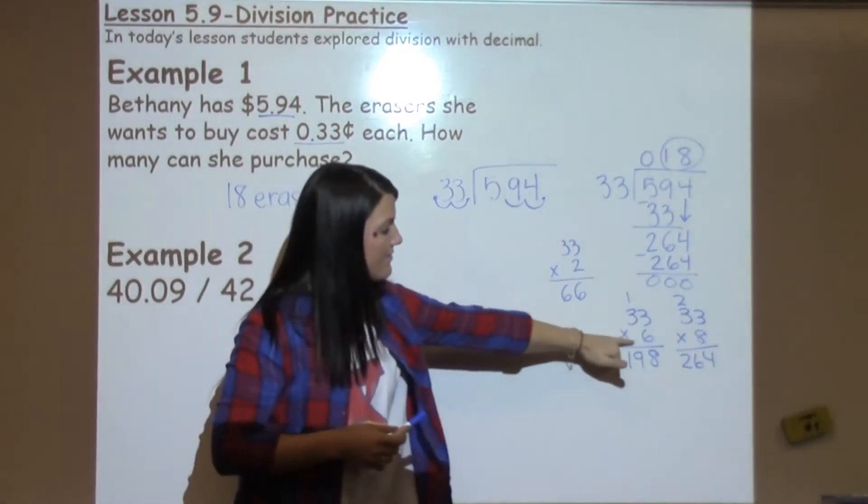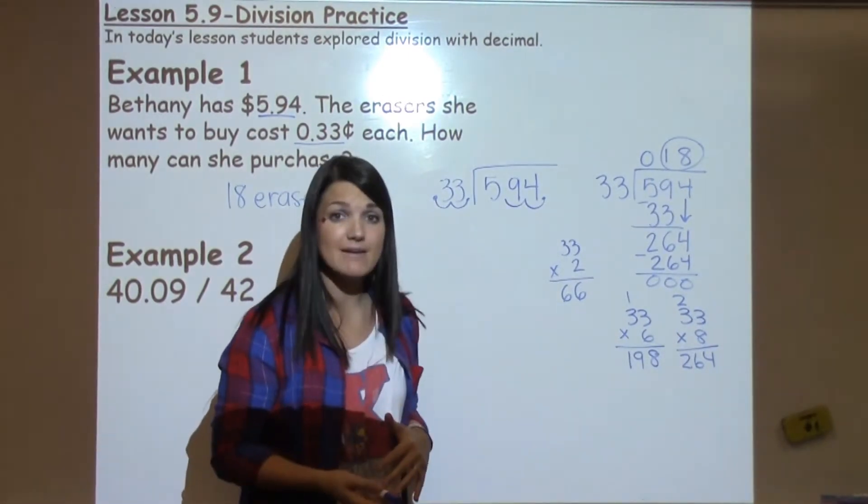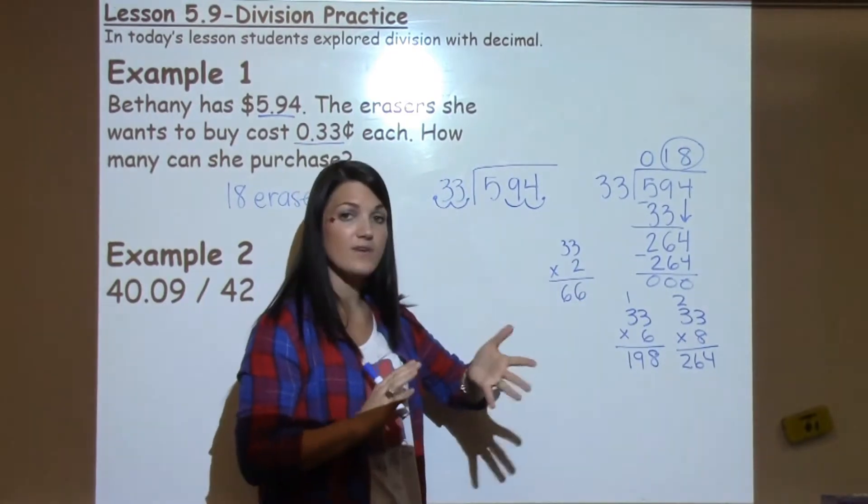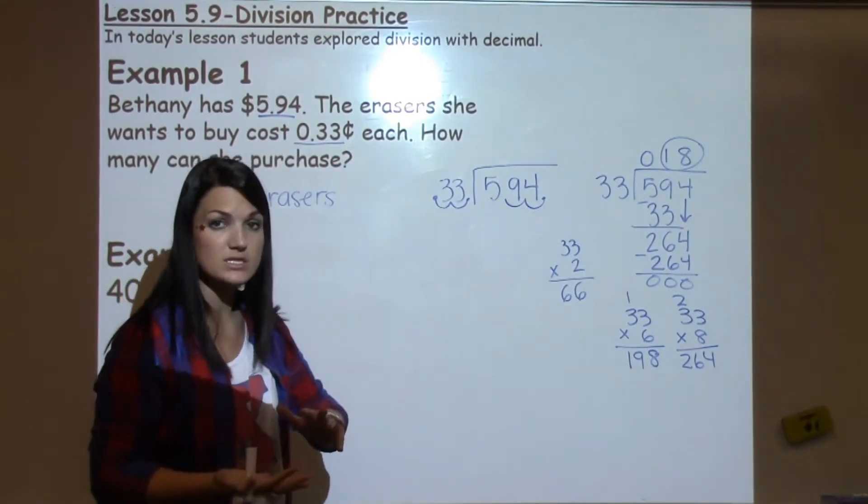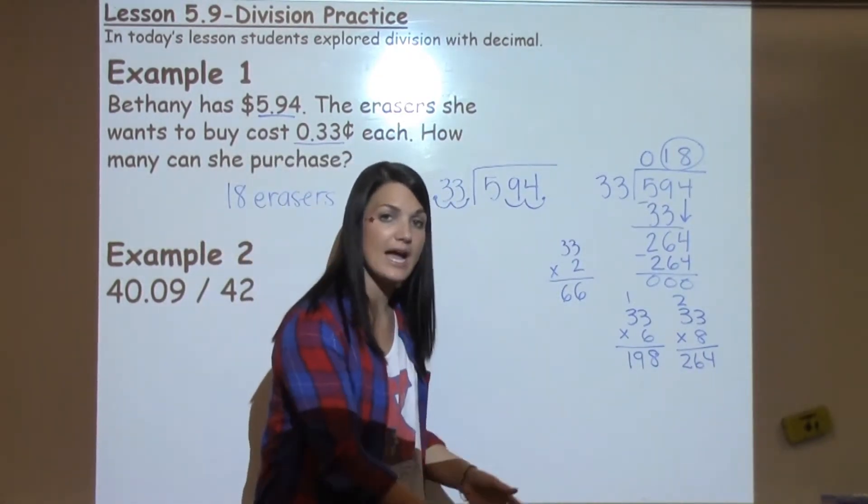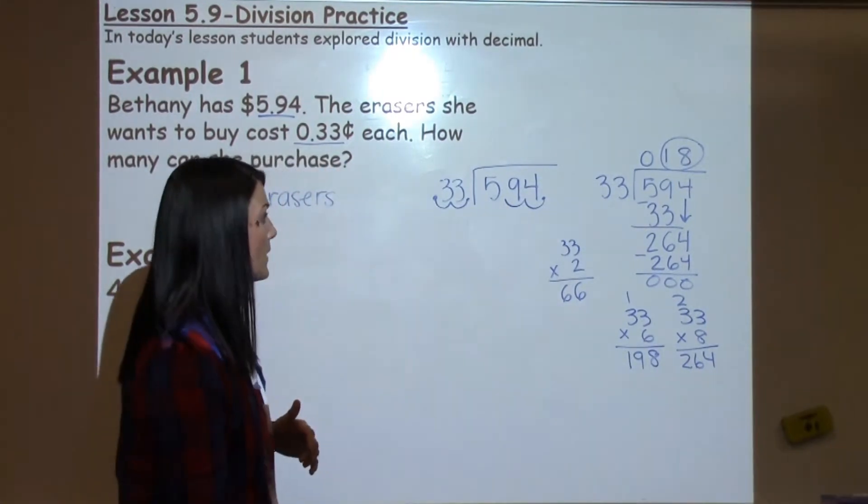Your student might not have thought to jump right to $8. Maybe they tried $33 times $7 first. That's okay. If they tried $33 times $7, they would have found a number in between $198 and $264. And then they would have seen that they need to try again and keep going higher to get as close as they can without going over to that $264.